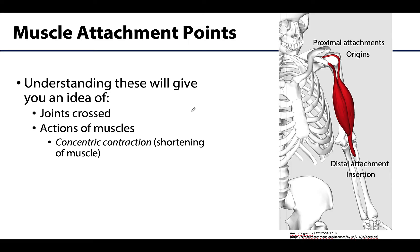Let's get into those muscle attachment sites. Understanding these sites — even the very basics, as in which bone a muscle attaches to — will give you information on two major things. First, it will help you understand which joint or joints that muscle crosses. And a muscle — this is an important concept, so make sure to put a little star next to it — a muscle must cross a joint or pass over a joint to be directly involved with the action of that joint.